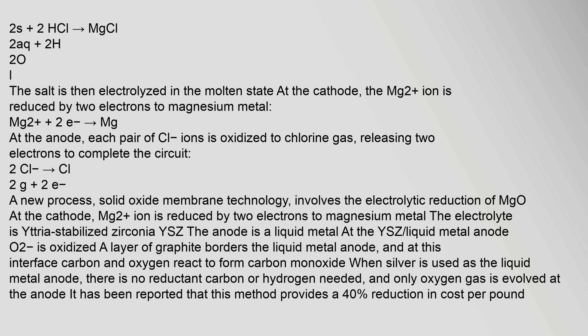A new process — solid oxide membrane technology — involves the electrolytic reduction of MgO at the cathode. The electrolyte is yttria-stabilized zirconia (YSZ). The anode is a liquid metal at the YSZ interface; O²⁻ is oxidized, and a layer of graphite borders the liquid metal anode where carbon and oxygen react to form carbon monoxide. When silver is used as the liquid metal anode, there is no reductant (carbon or hydrogen) needed, and only oxygen gas is evolved at the anode. It has been reported that this method provides a 40% reduction in cost per pound.